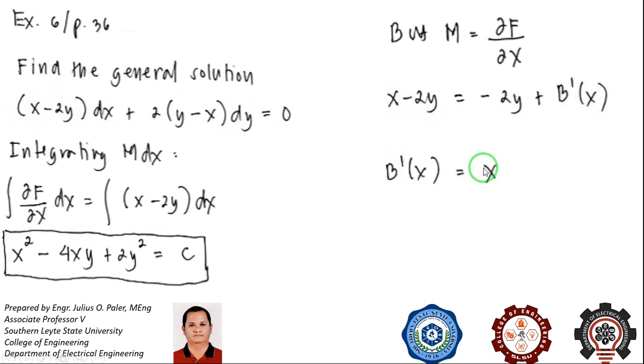Now minus 2Y and minus 2Y will be canceled, therefore B prime of X is just equal to X. And to solve for B of X, we integrate: B prime of X dx will give us B of X equals X squared all over 2.